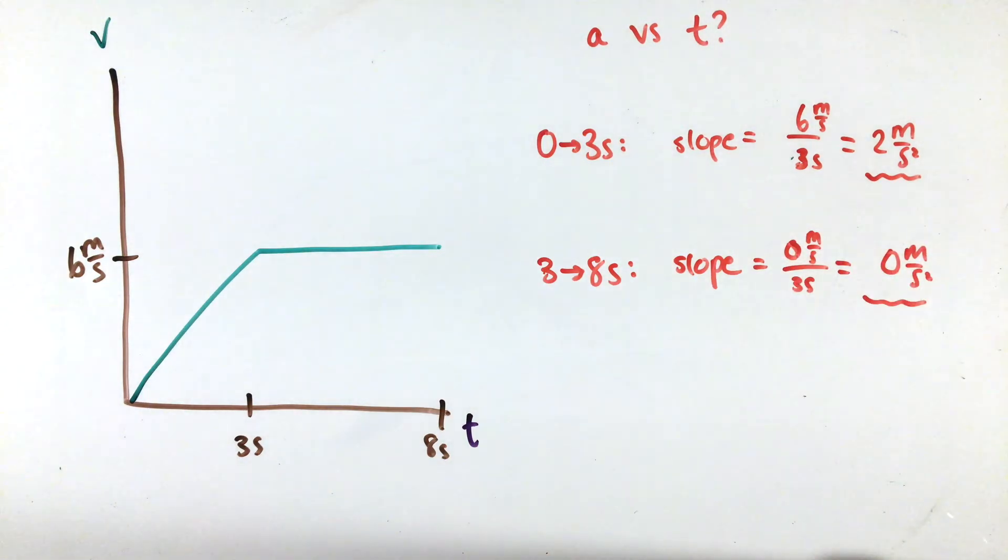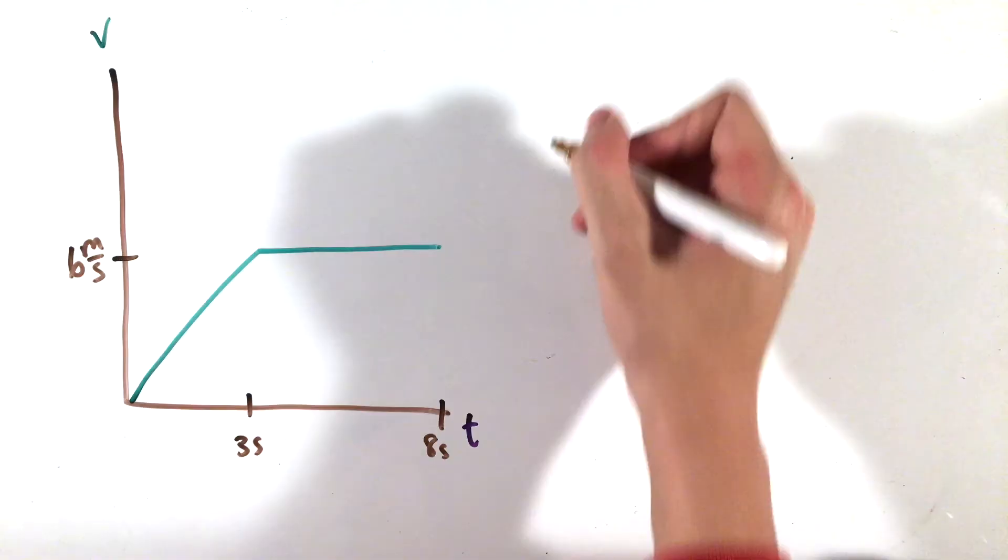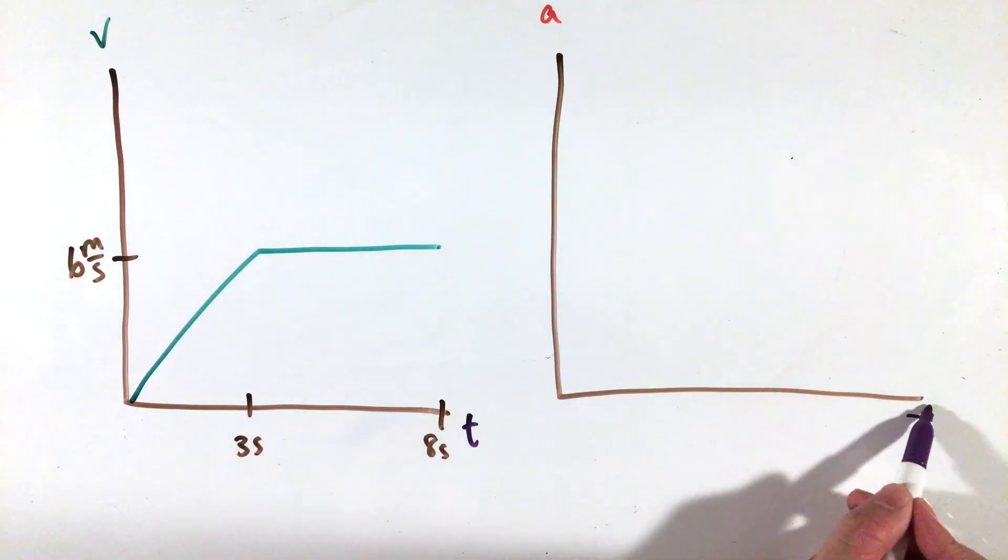From 3 to 8 seconds, the velocity does not change, thus the slope is 0. From these numbers, we can construct our corresponding acceleration versus time graphs, which looks something like this.